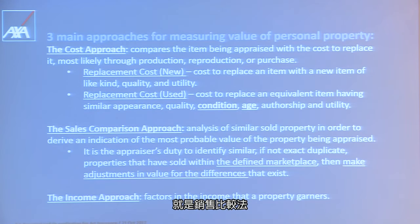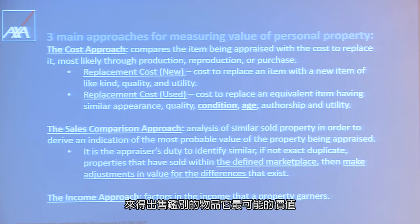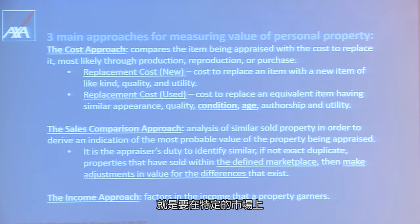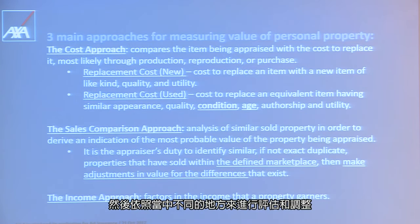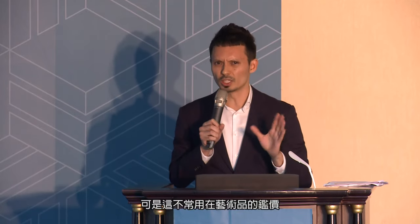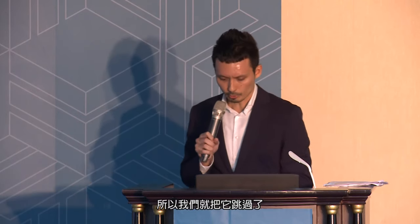The second approach is the sales comparison approach. It is an analysis of similar sold property in order to derive an indication of the most probable value of the property being appraised. It is the appraiser's duty to identify similar, if not exact, duplicate property that was sold within the defined marketplace, and make adjustments in value for the differences that exist. The last one is the income approach, which factors in the income that a property garners. This is not really often used for art appraisals, so we will skip this one.